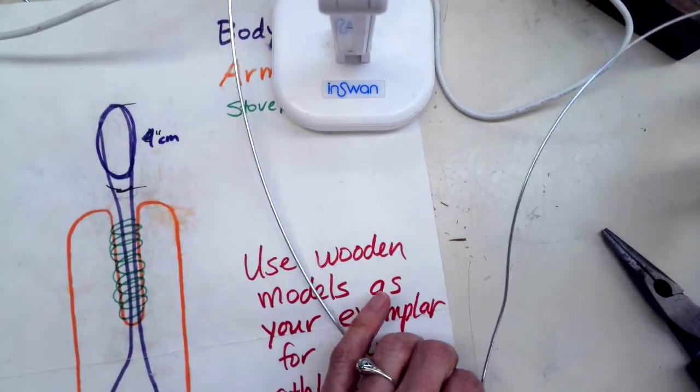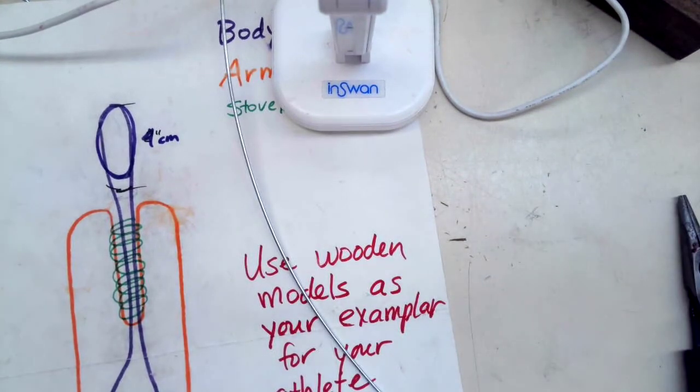So I have I've already cut my 30 inch long piece for my body, so now I'm going to get the thinner wire. And by the way you can use the thicker wire for both, but some kids find it hard if you don't have very strong hands, you might want to use the thinner wire.